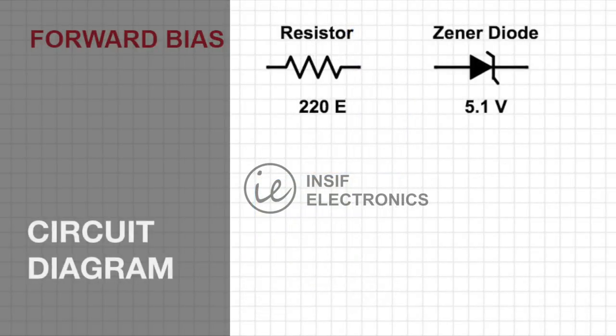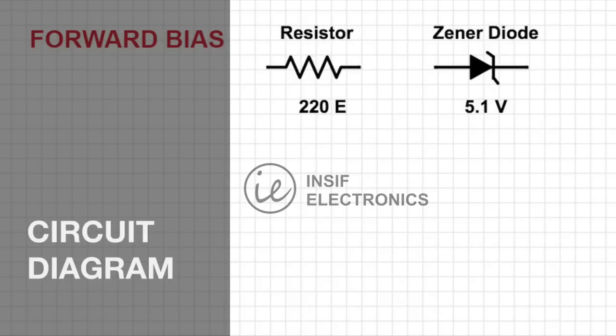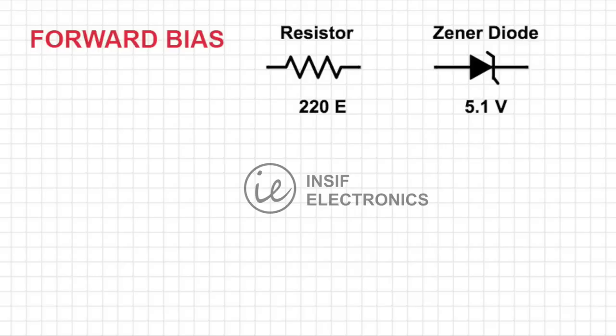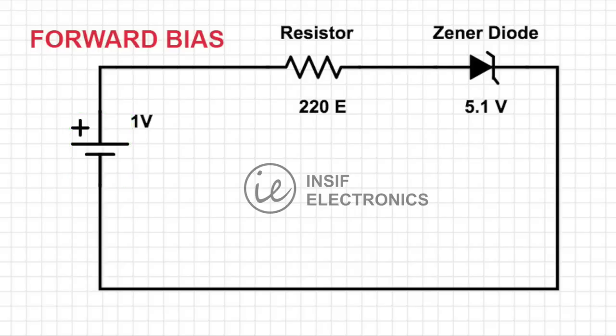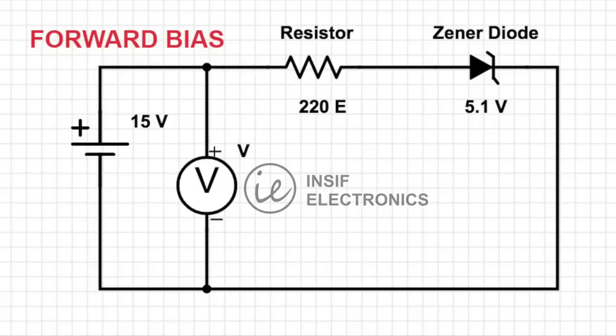Now let's see how to plot this graph using the Zener diode characteristics apparatus. First, see how to do connections in forward bias. Connect the Zener diode with a power supply with resistance in series, connecting it in forward bias. Connect the anode to the positive of the supply and the negative to the cathode of the diode. To plot the graph, connect the voltmeter in parallel and ammeter in series as shown.